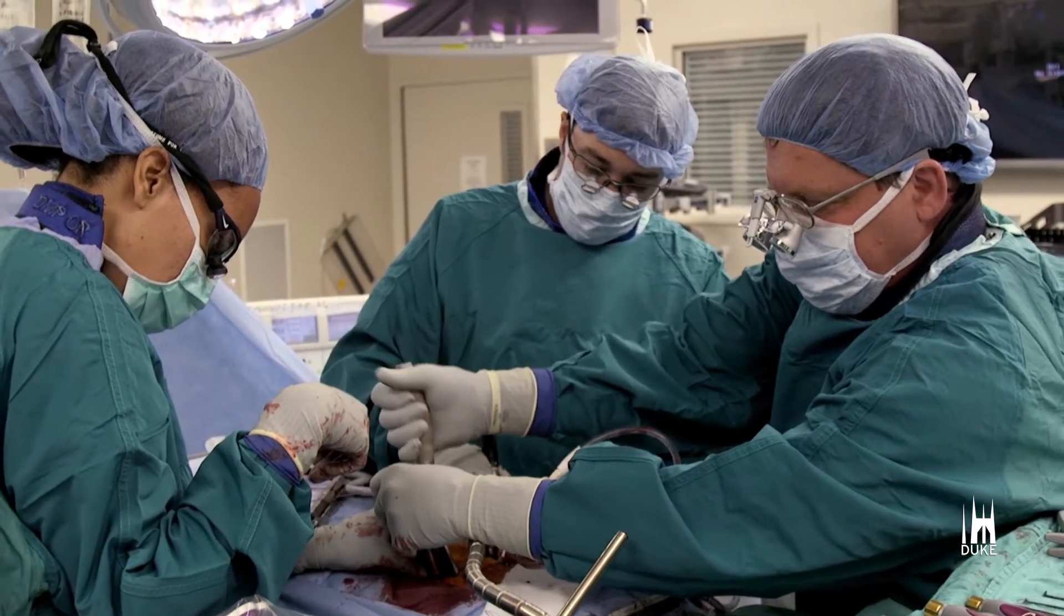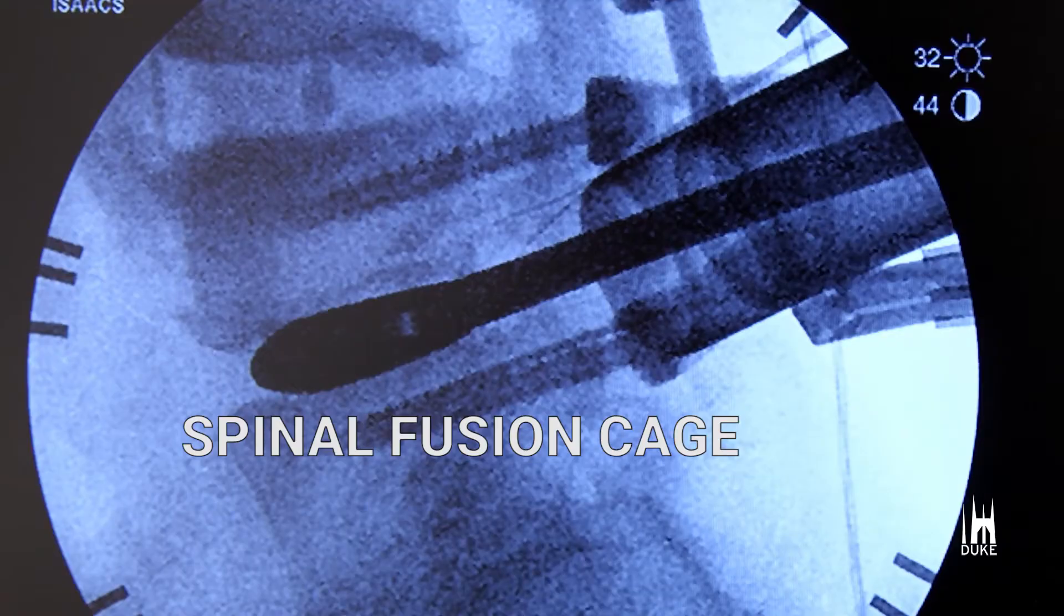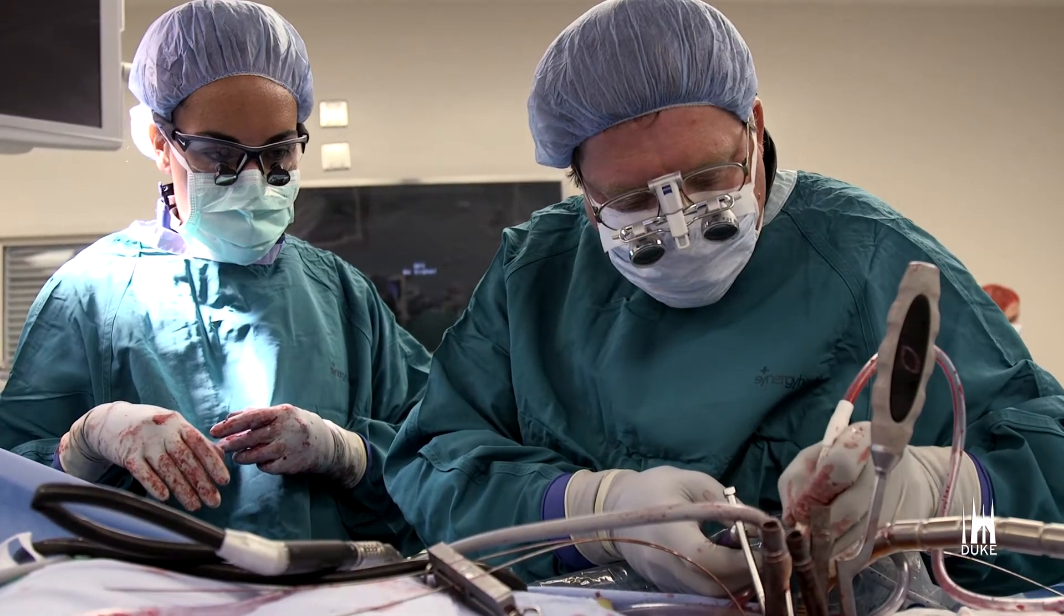One of the things we do very commonly as spine surgeons is have to put in small cages into people's spines which can help bone grow in the direction you want it to.